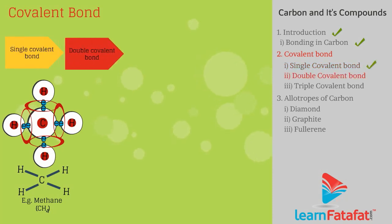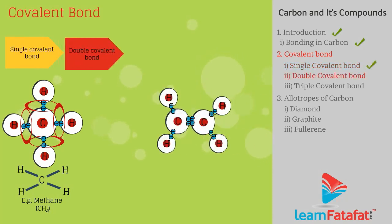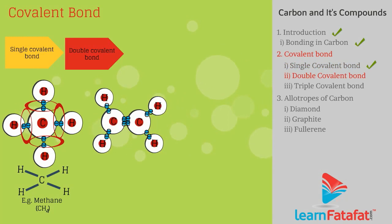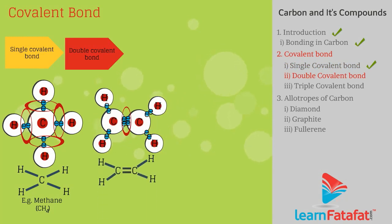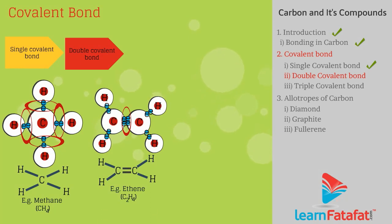Double covalent bond: The bond formed by sharing of 4 electrons between the atoms is called a double covalent bond. The bond formed in the ethene molecule is an example of a double covalent bond.